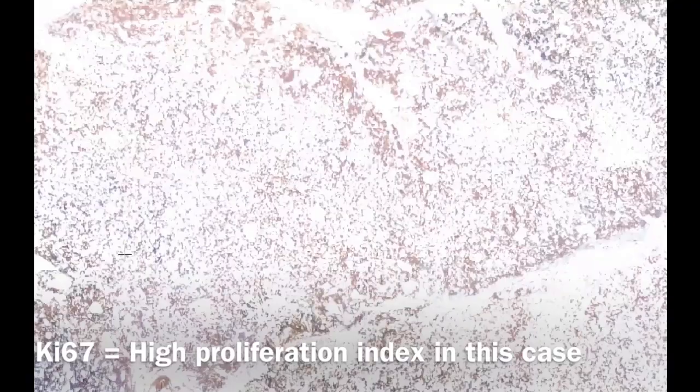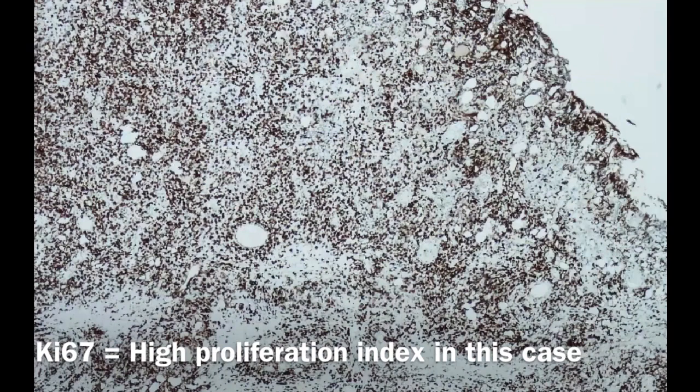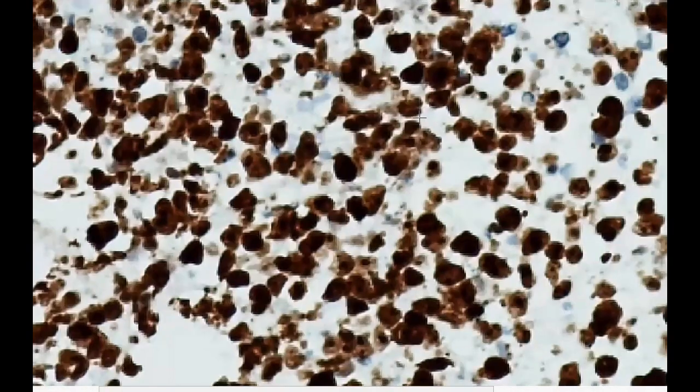This is the last stain — the Ki67 — to see the proliferation index. From the morphology, I suspected it would be high, and indeed it's very high. We consider it to be approaching 100% for these large atypical cells. The Ki67 is clearly staining these large cells. For the HANS classification, we look at BCL6, CD10, and MUM1. We classified this case by HANS criteria as non-GCB diffuse large B-cell lymphoma.